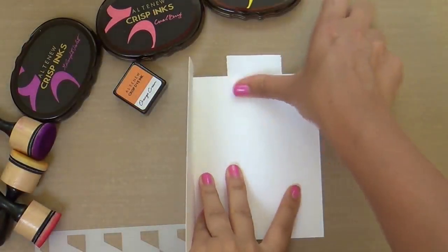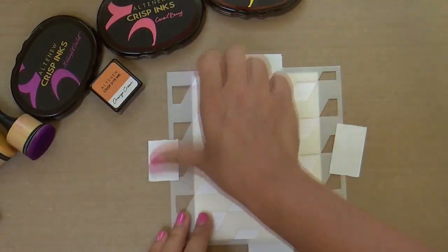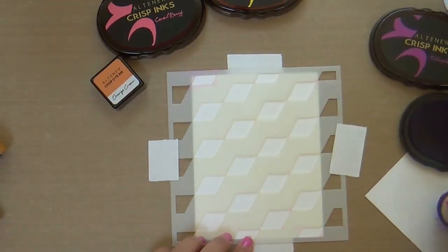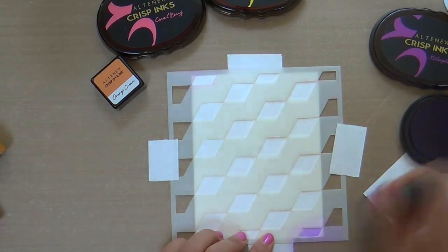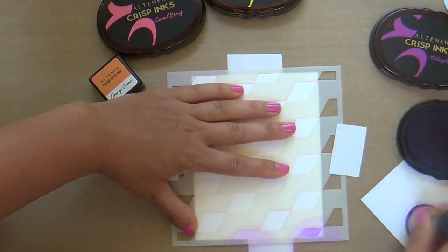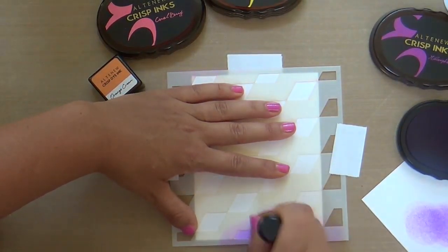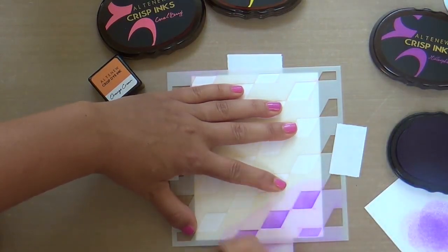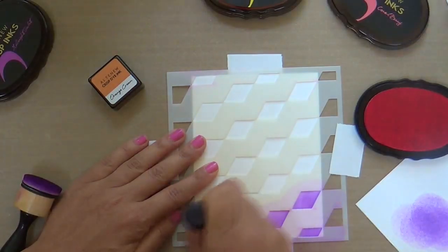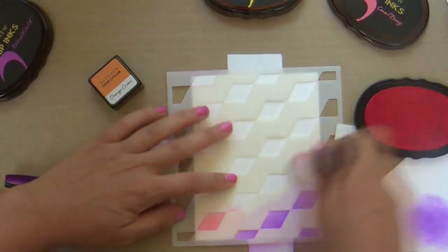Well I'm gonna show you, it's super duper easy peasy. I'm starting with the cube builder stencil. I've got some Altenew inks, starting with midnight violet, going in with my ink blender. I'm just doing two rows. You can see that the cube builder stencil is basically rows of diamonds.